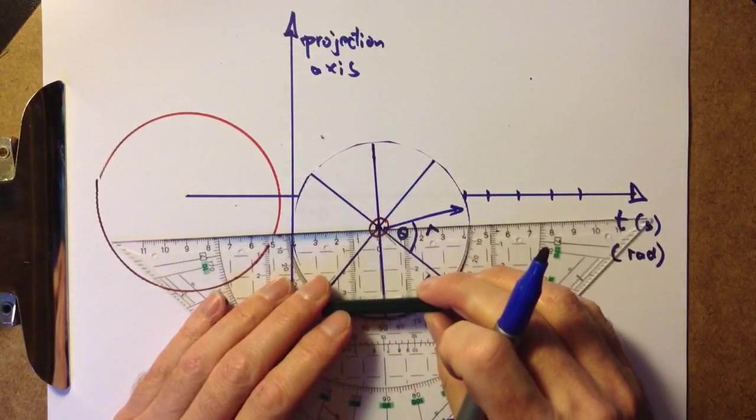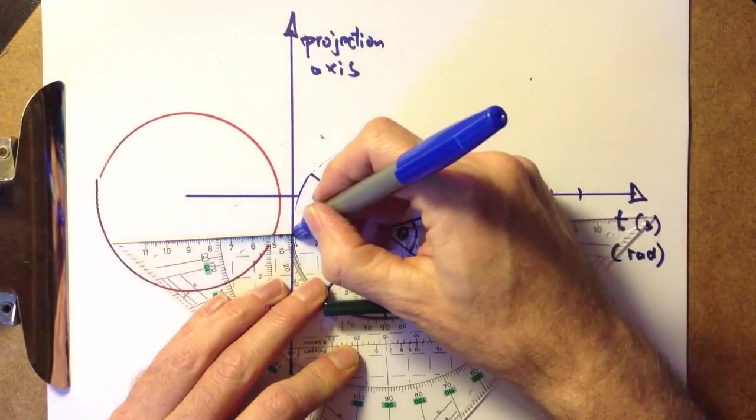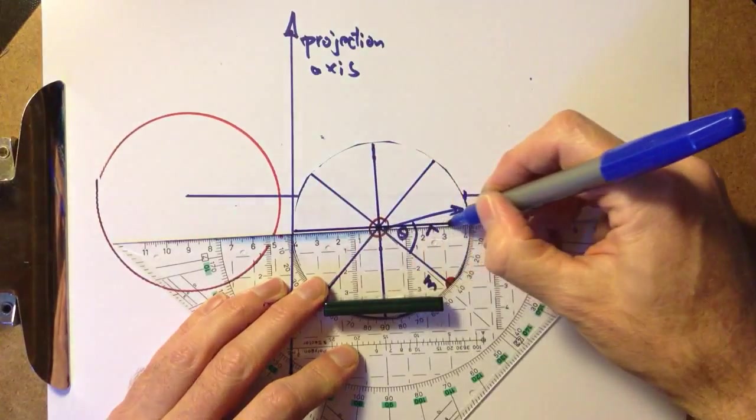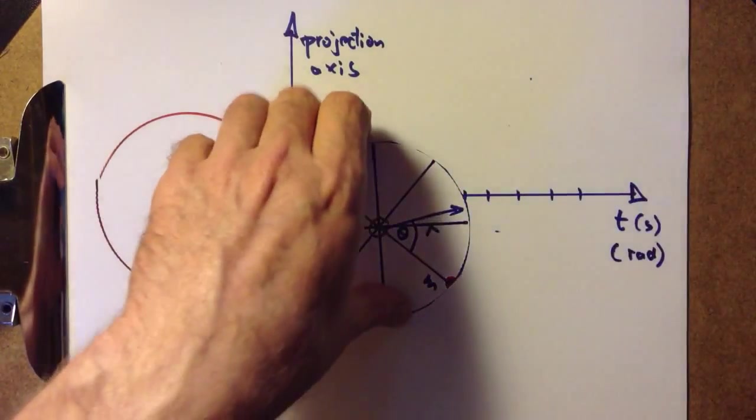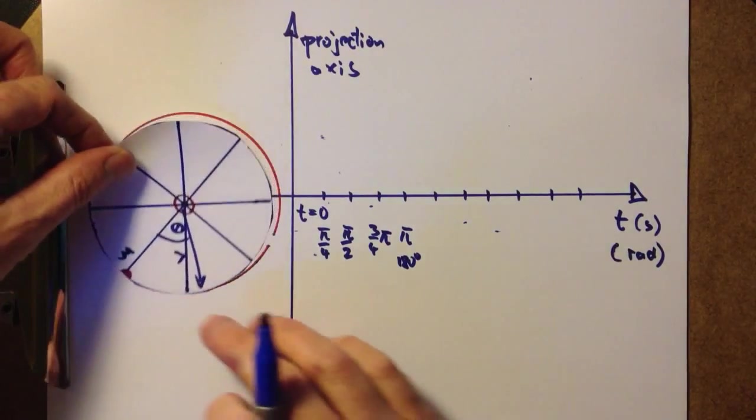Two more eighths to come. So now we've got eight octans, and each octan corresponds to π/4 radians, or 45 degrees.